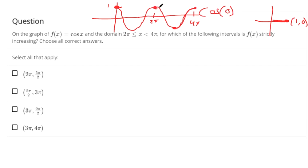At 2 pi, we're going down. A little to the right of 2 pi, we're still going down. Graph's still going down. It's when we reach this valley that we start increasing.